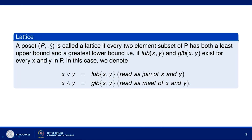Hello friends, welcome to my lecture on Lattices. We will define a lattice and see some of its properties. A poset P is called a lattice if every two-element subset of P has both a least upper bound and a greatest lower bound. Least upper bound we denote by LUB, so if X and Y are any two elements of P, then LUB means least upper bound of X and Y, and GLB means greatest lower bound of X and Y.